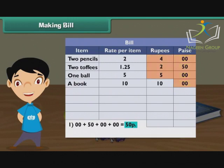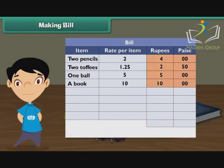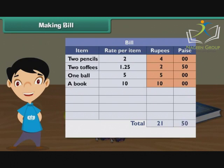Add the numbers in the rupees column: 4 plus 2 plus 5 plus 10 is equal to 21 rupees. Make a new row and write 'Total' under the rate per item column. Write 21 rupees in the rupees column and 50 paise in the paise column. The bill is ready. Ramita has to pay Rupees 21 and 50 paise to the shopkeeper.